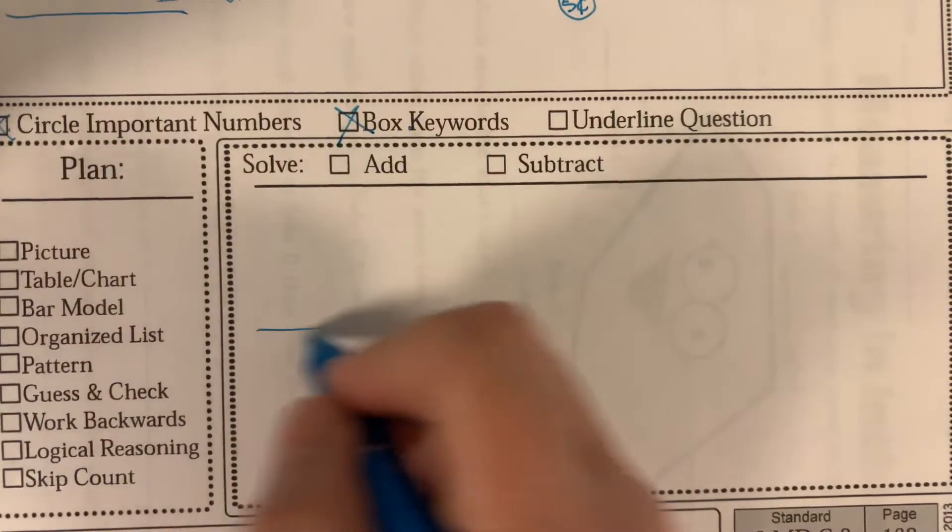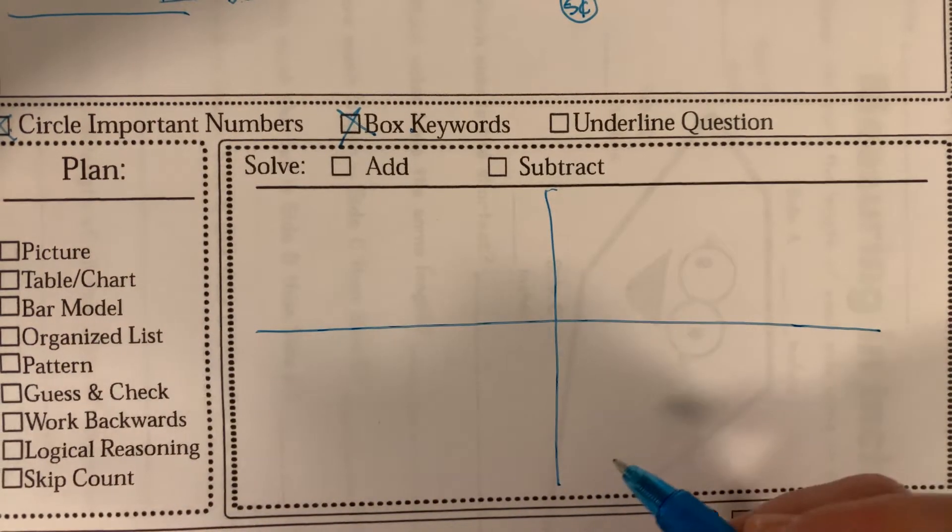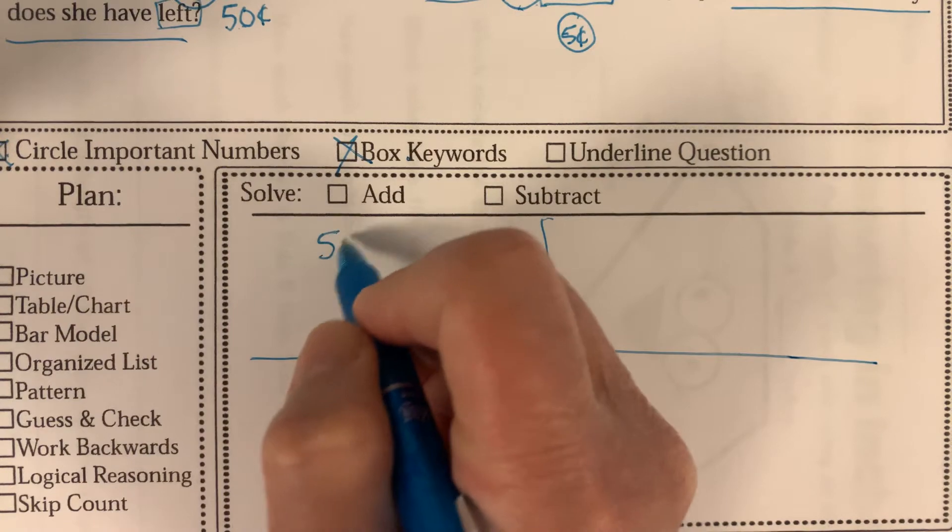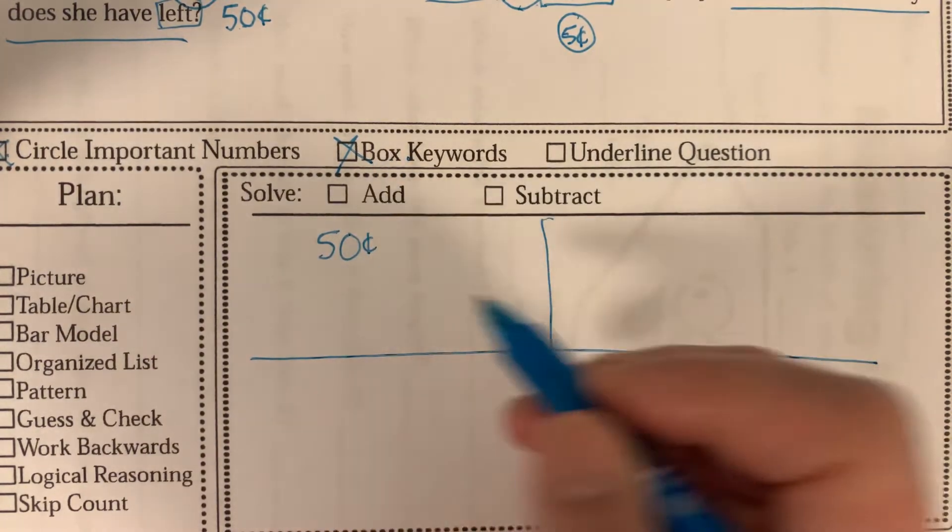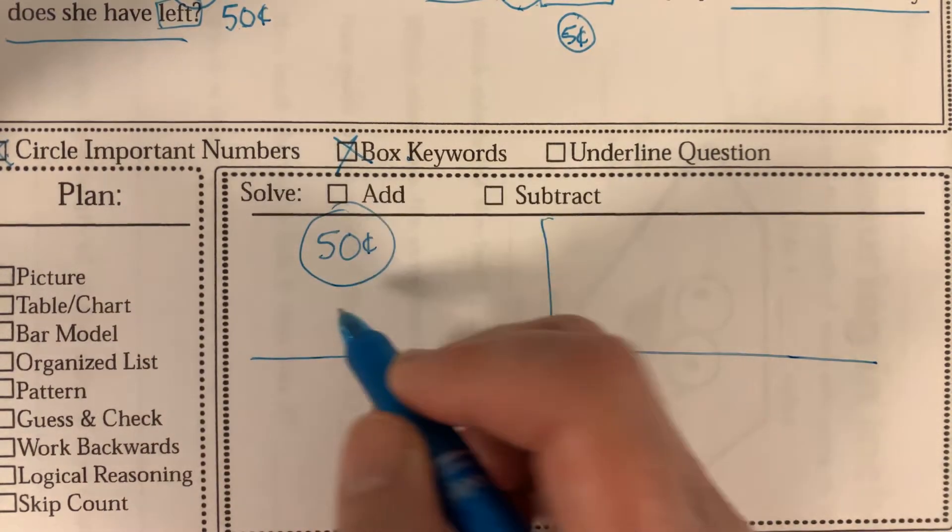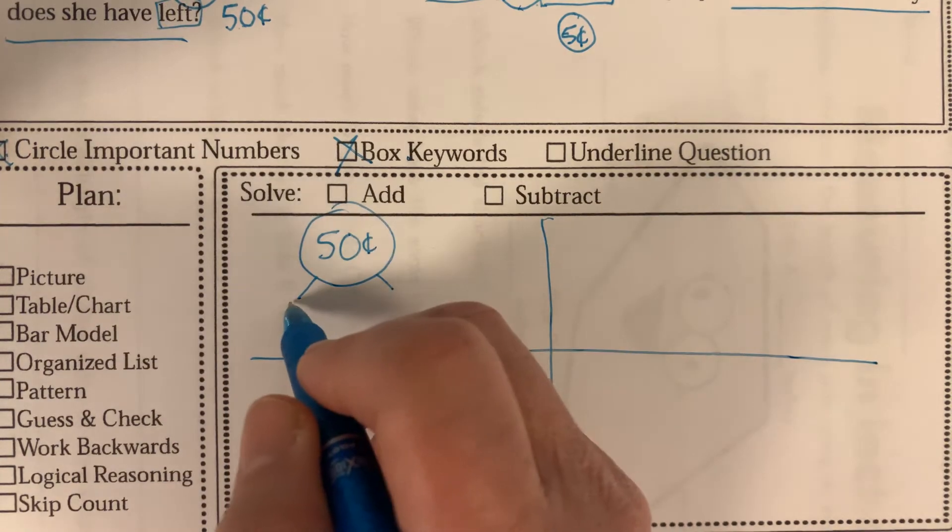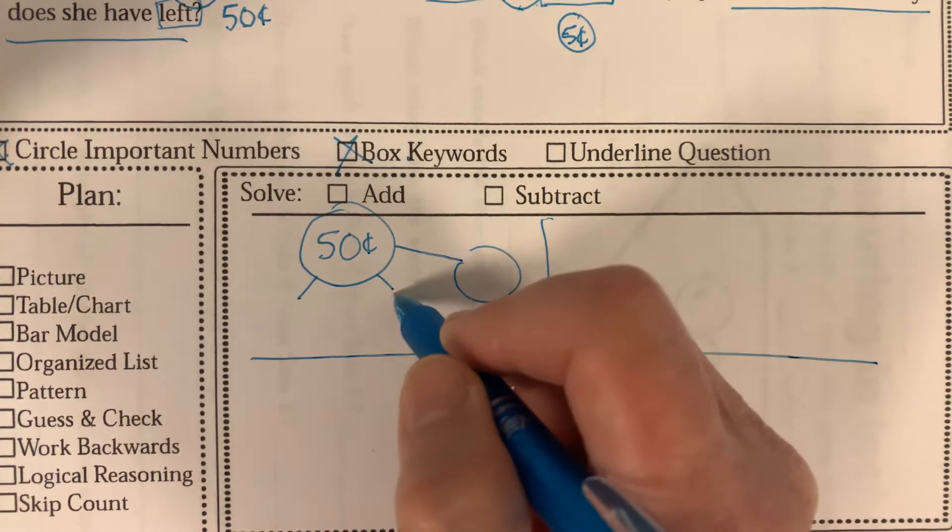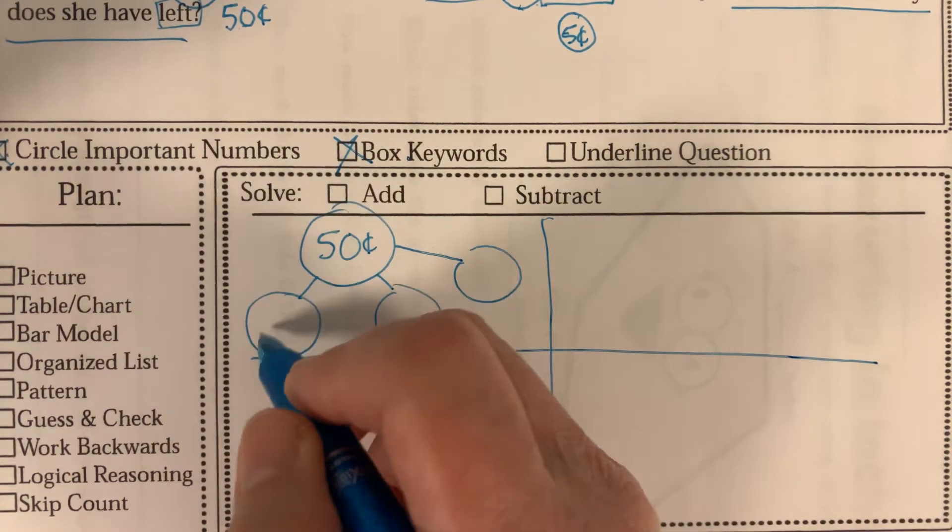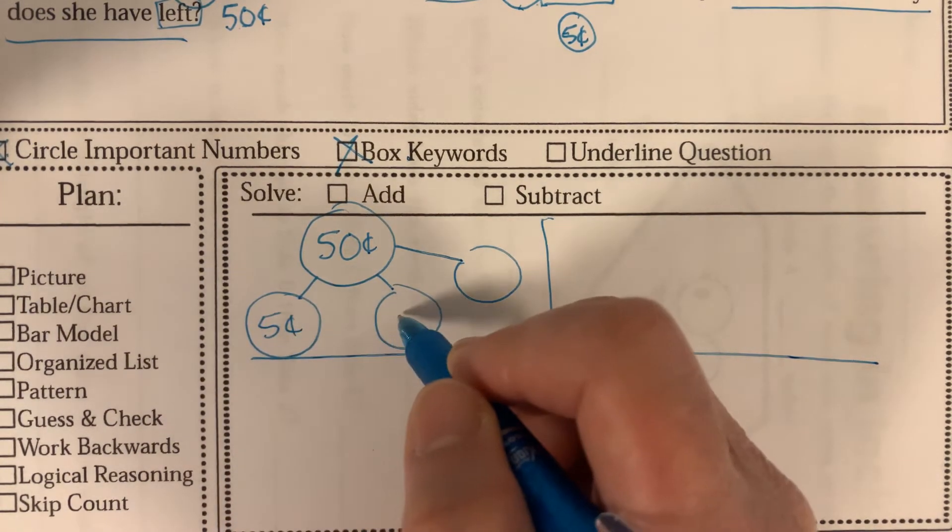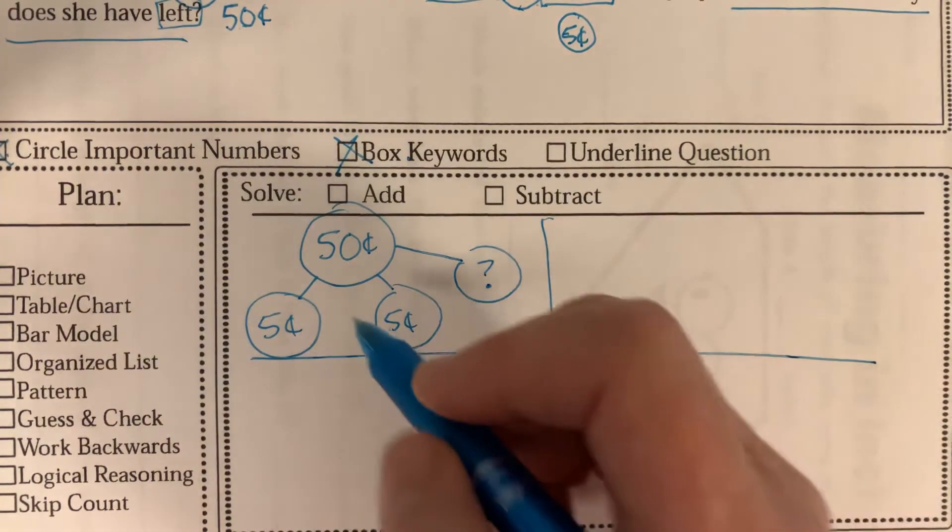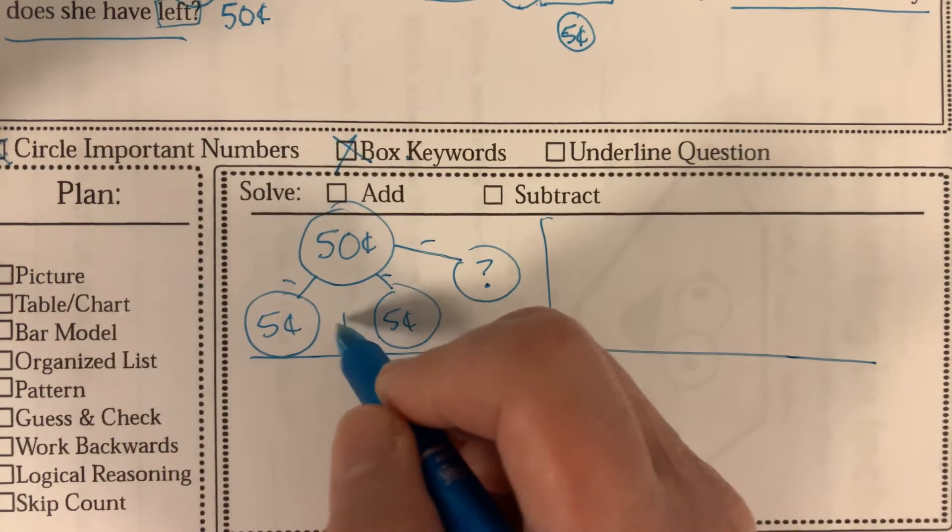All right, so if we set it up in our read, write, draw, we read it and we found out that she had 50 cents and we could set that up as a number bond. She had 50 cents and she spent two nickels, so we're going to have three things here. Five cents and five cents, and then how much is left? All right, so minus on the lines, plus in the middles.